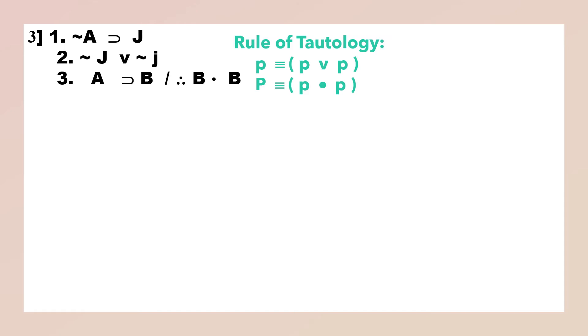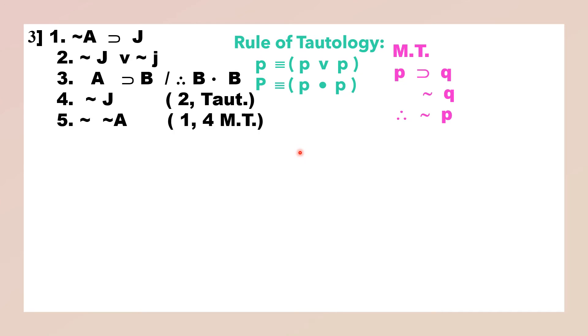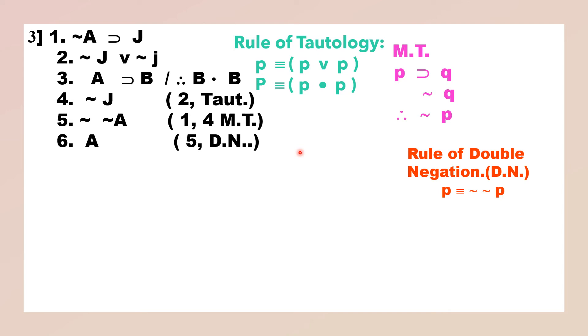Now we come to the third example. Here you can see that J is common, but they are not both conditional propositions, so you can convert them into conditional form. You have both J's, so you can use the rule of Tautology and get ¬J. Now you can apply the rule of M.T. to get the negation of ¬A. So you get ¬J, then apply the rule of Double Negation to get A. Once you get A, you have the antecedent of the third premise.